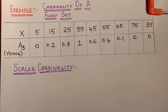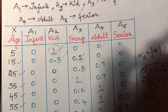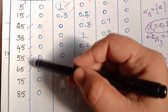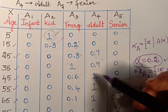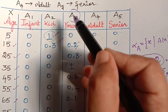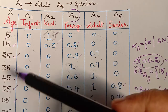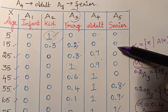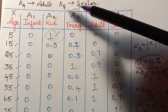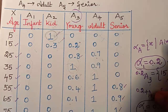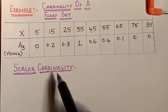We shall consider the same example from our previous videos, where the values of X are ages from 5 to 85 in that interval. We shall consider the fuzzy set A3, which is the fuzzy set 'Young', to explain the concept of cardinality. You can apply this concept to any of the fuzzy sets. I will write this universal set and fuzzy set in a separate sheet.